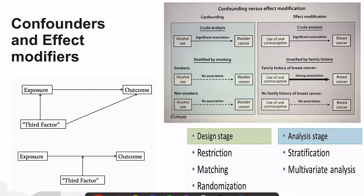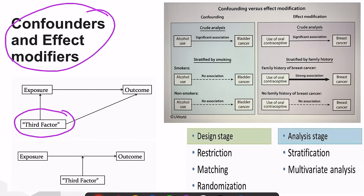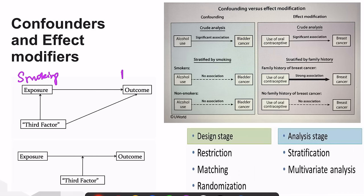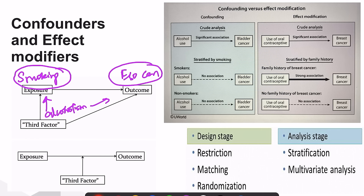The next important topic is confounders and effect modifiers. A confounding factor is a third factor related to both exposure and outcome, and it is unequally distributed among the exposed and non-exposed groups, causing a false association. For example, when studying smoking and esophageal cancer, alcoholism may be a confounding factor — it is directly related to both esophageal cancer and smoking. When stratified by alcoholism, the association between smoking and esophageal cancer disappears, confirming alcoholism as a confounder.